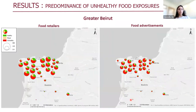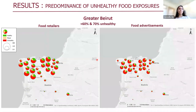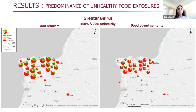Moving to Greater Tunis, we can see the same pattern — a predominance of unhealthy food retailers and food advertisements. In total, 60% of retailers and 70% of advertisements were labeled as unhealthy in Greater Tunis. The density of retailers is a bit higher relative to advertisements, as indicated by the larger circles for food retailers.